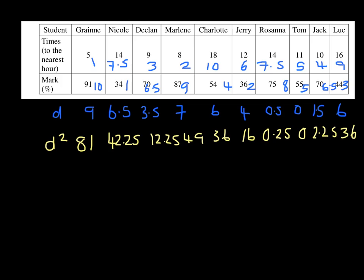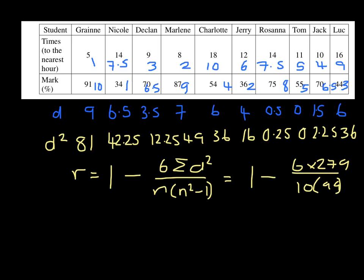Remember the formula for Spearman's rank is in the formula booklet. Spearman's rank R equals 1 minus 6 sum of d squared over n times n squared minus 1. So that's 1 minus 6 times 279 all over 10 times 99, which is negative 38 over 55, negative 0.691. This value of Spearman's rank tells us we have a negative correlation.